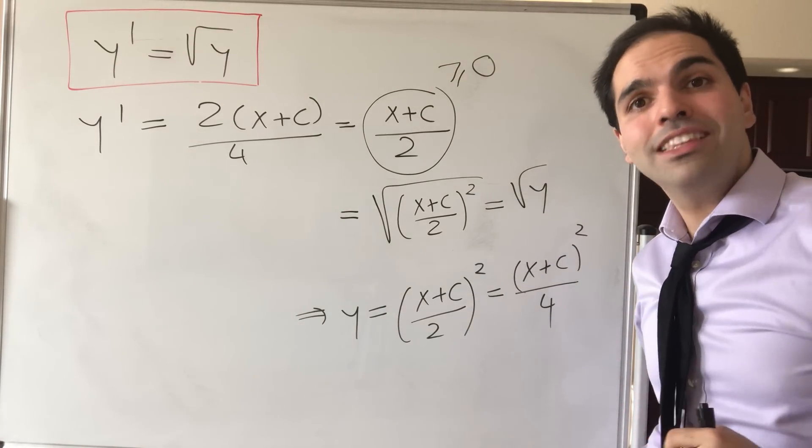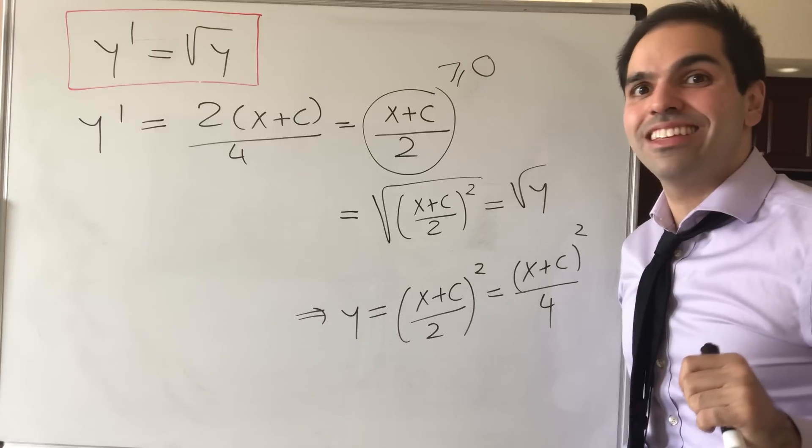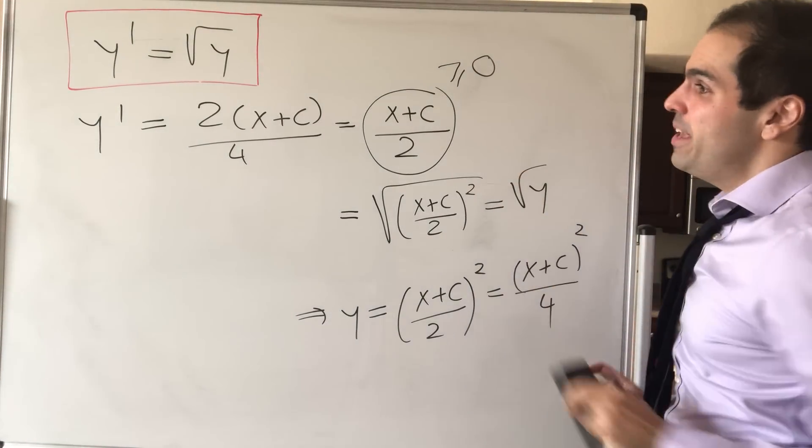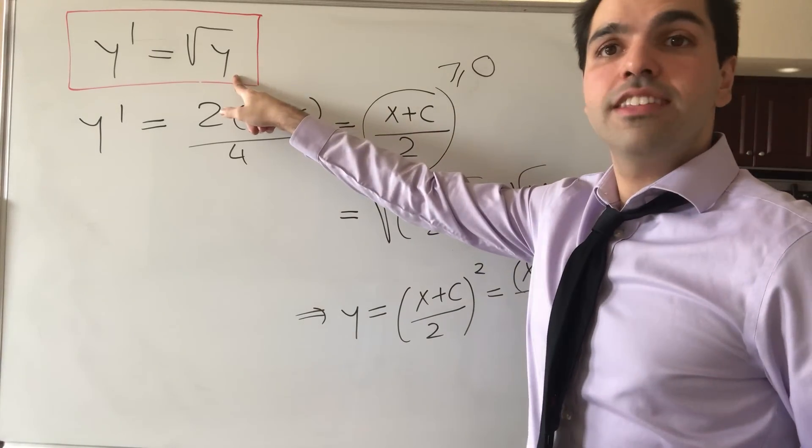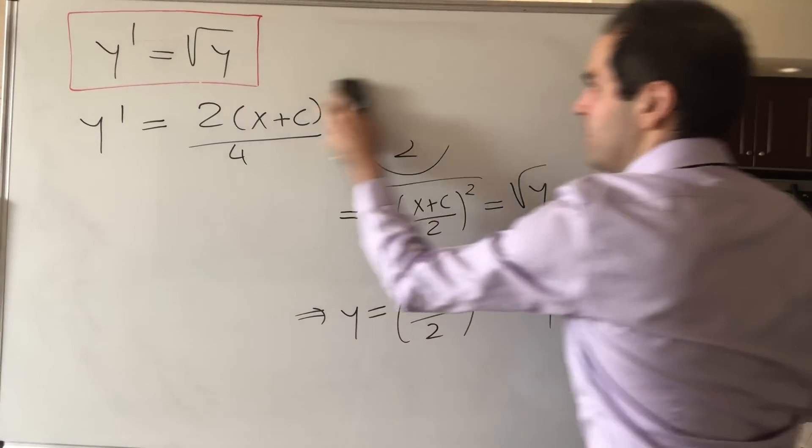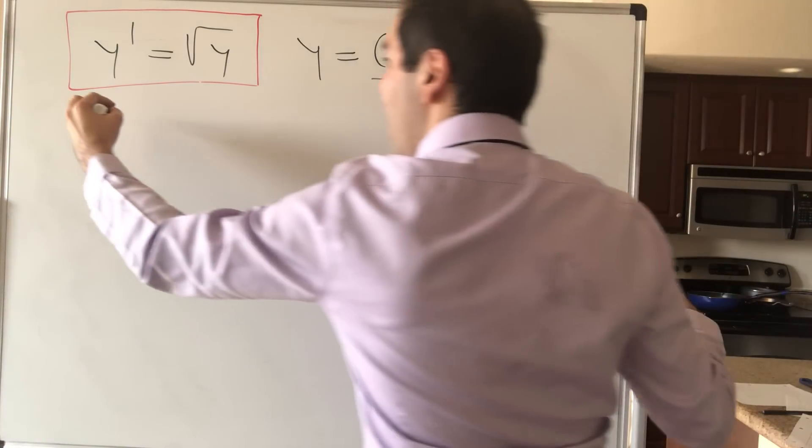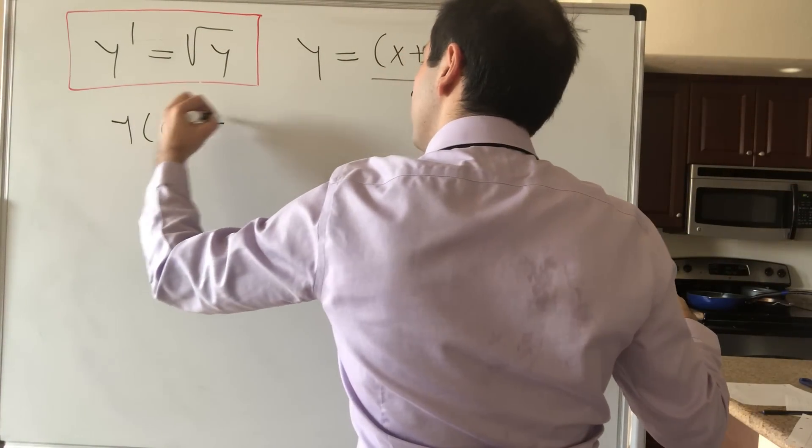Now I told you at the beginning that there's a twist at the end of the video. Well, here's the twist. Because let's try to solve this equation, but with an initial condition. So now let's just assume, let's say, y at 0 equals 0.